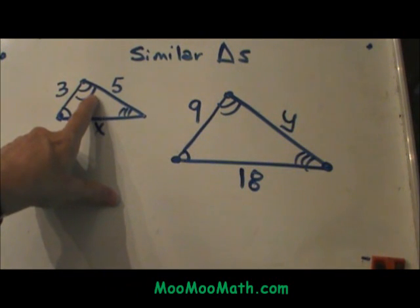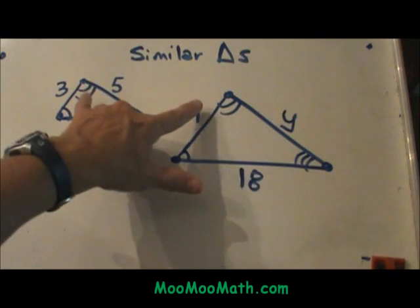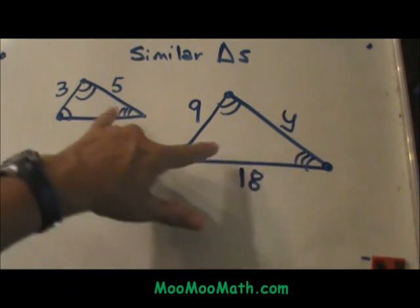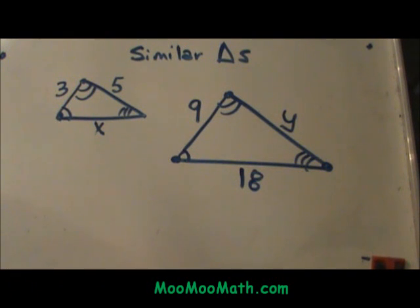And then this angle up here is marked with 2 and this angle up here is marked with 2, so those two angles are congruent. And this is marked with 3 and this is marked with 3. So those are corresponding angles and they are the same.